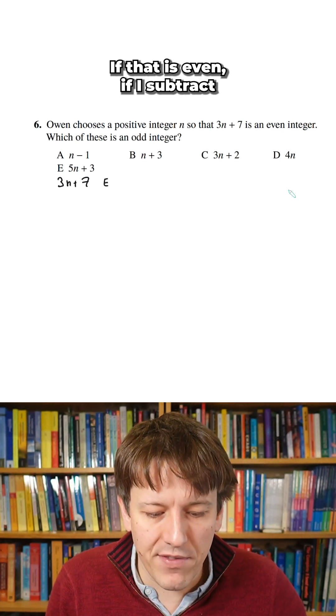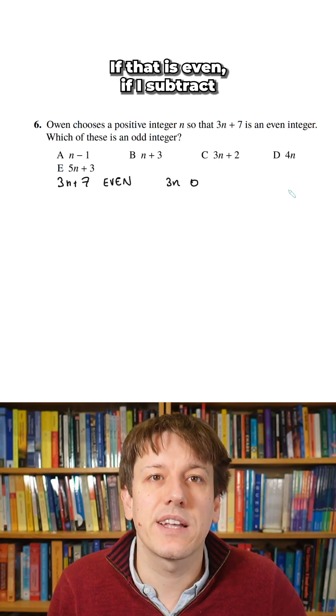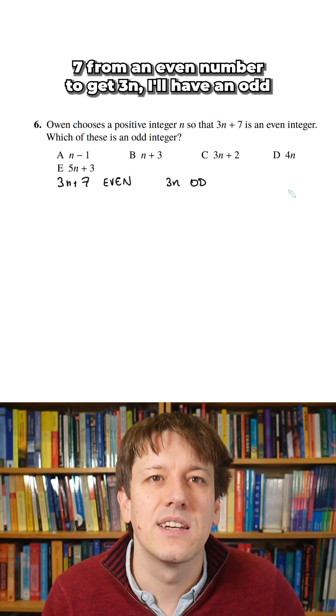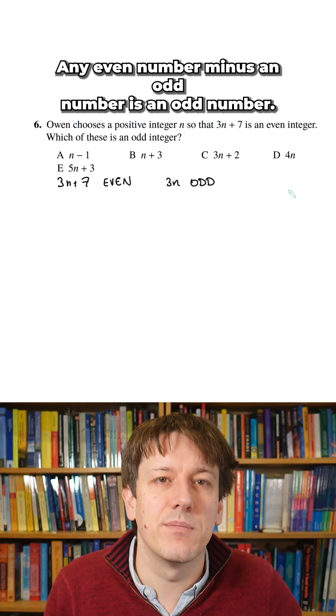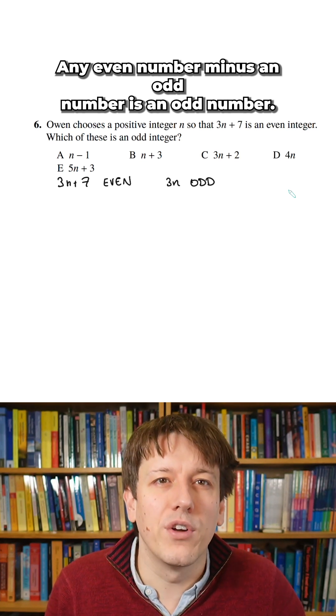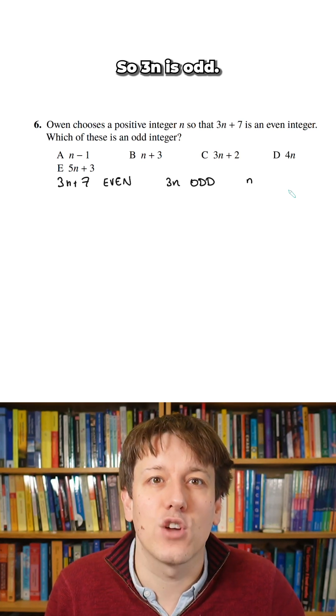Let's start with 3n plus 7. If that is even, if I subtract 7 from an even number to get 3n, I'll have an odd number. Any even number minus an odd number is an odd number. So 3n is odd.